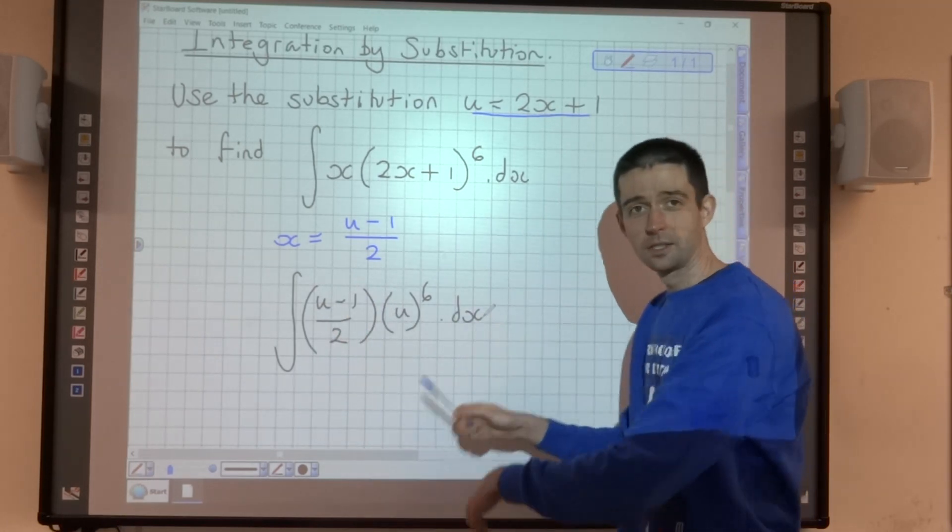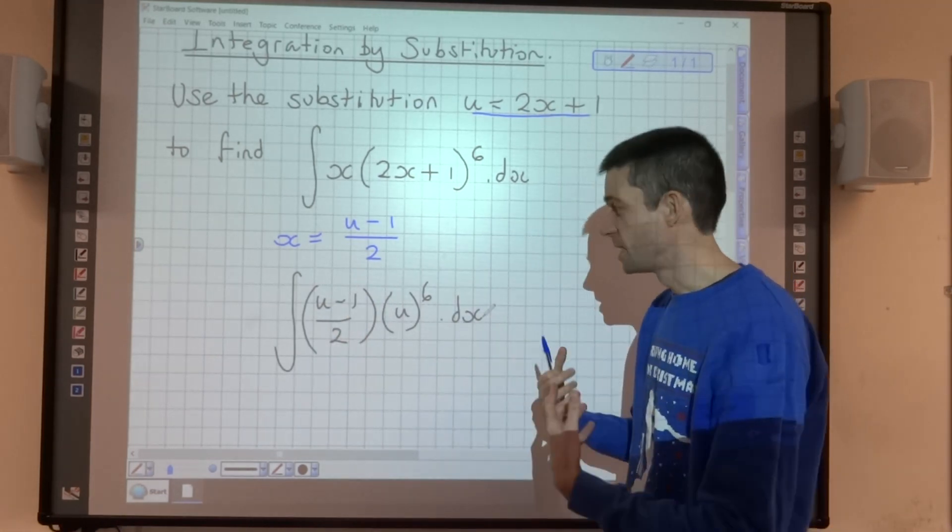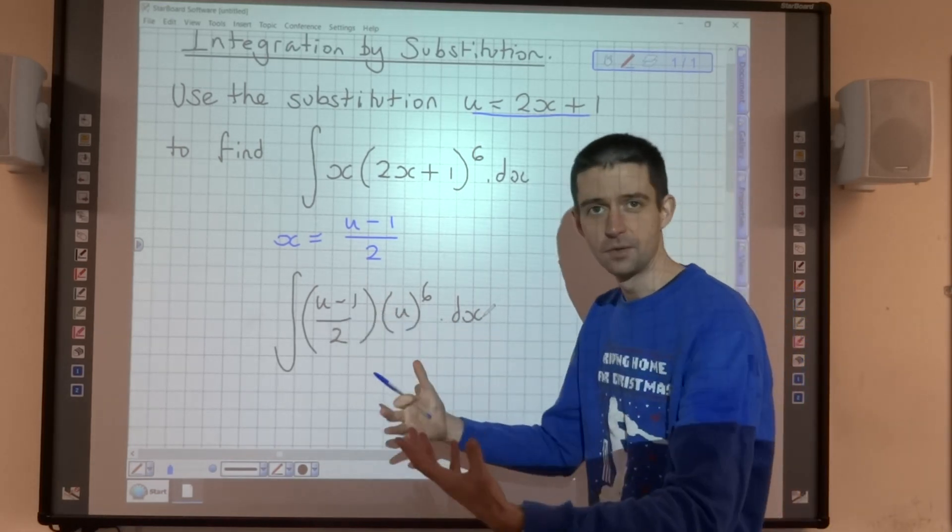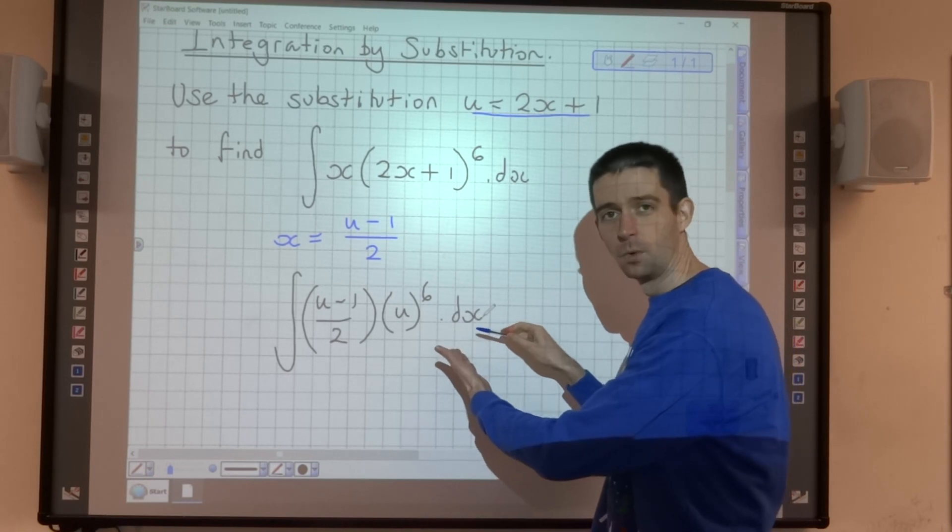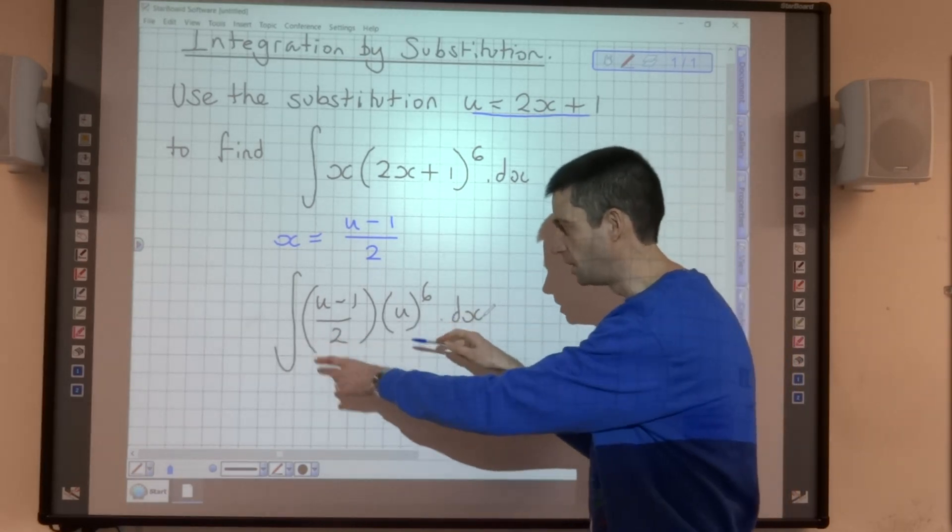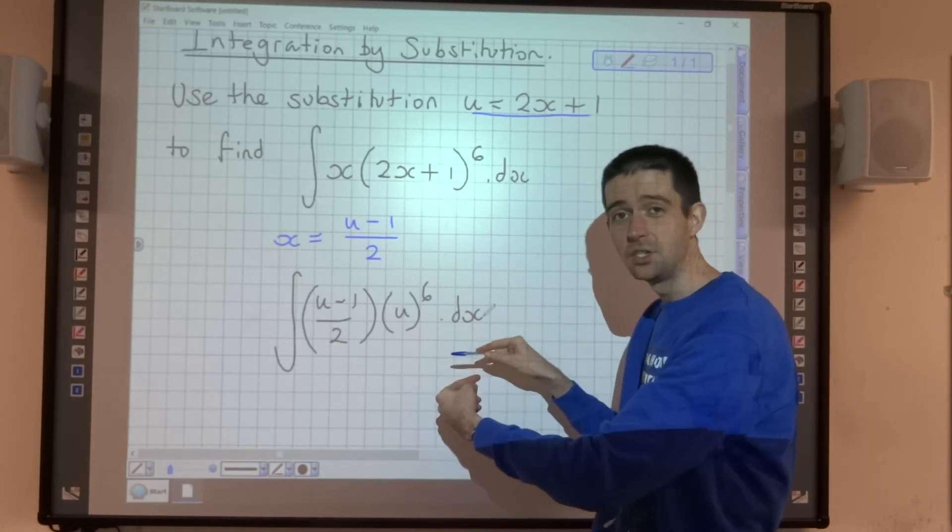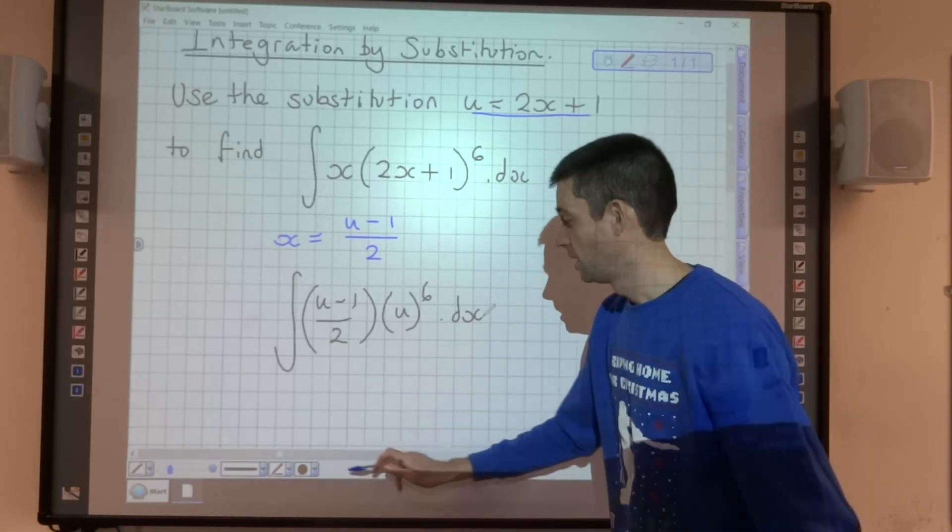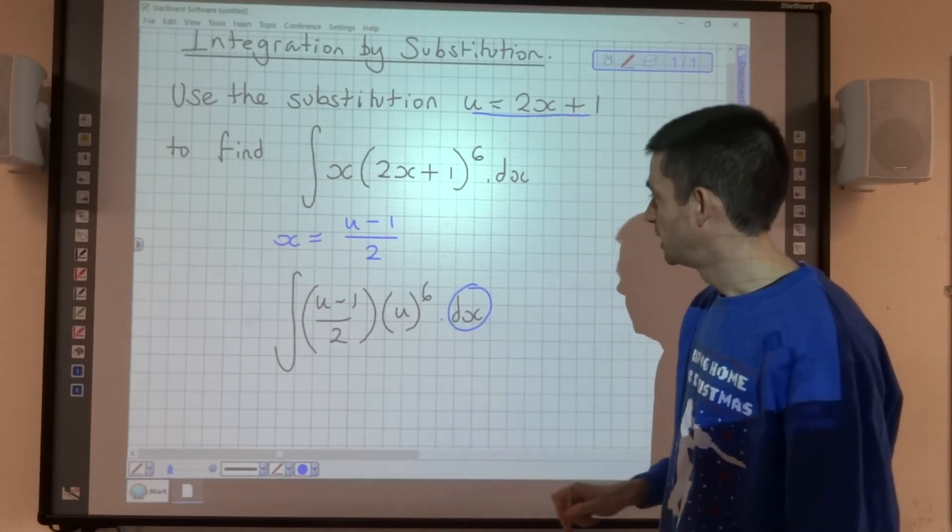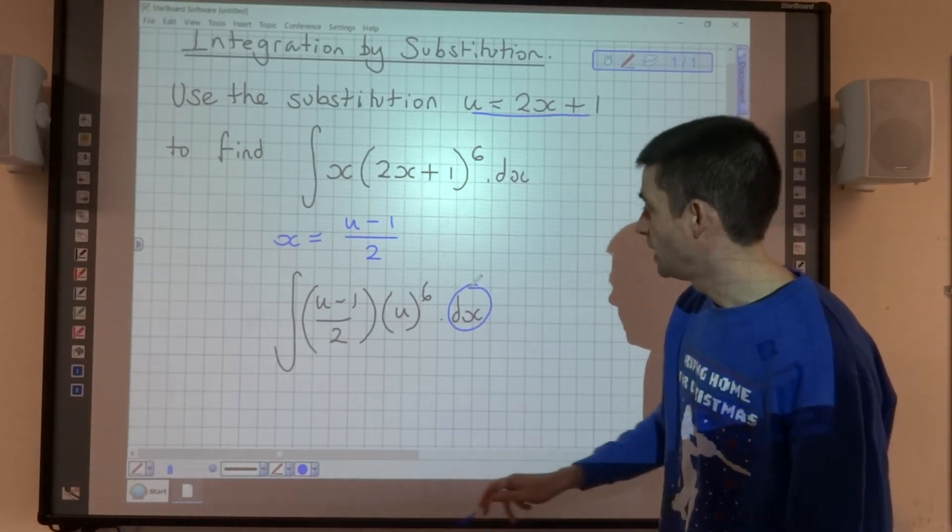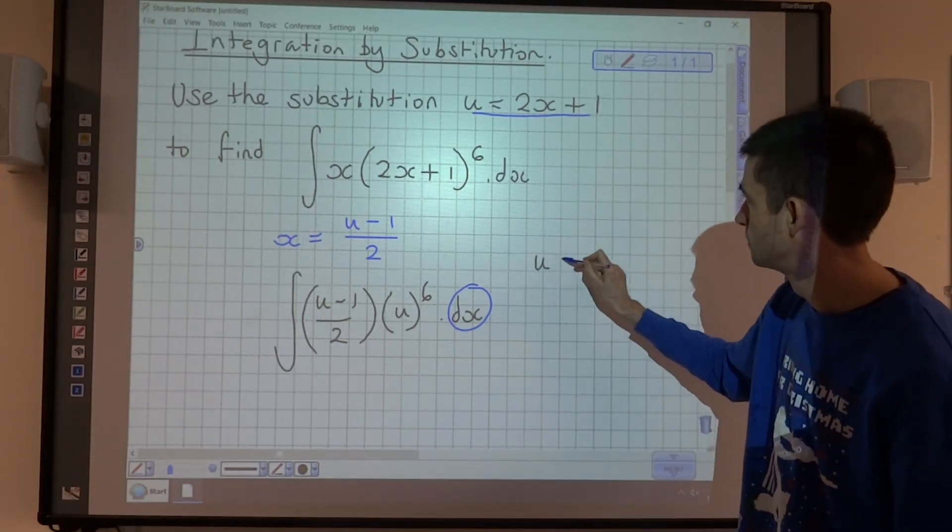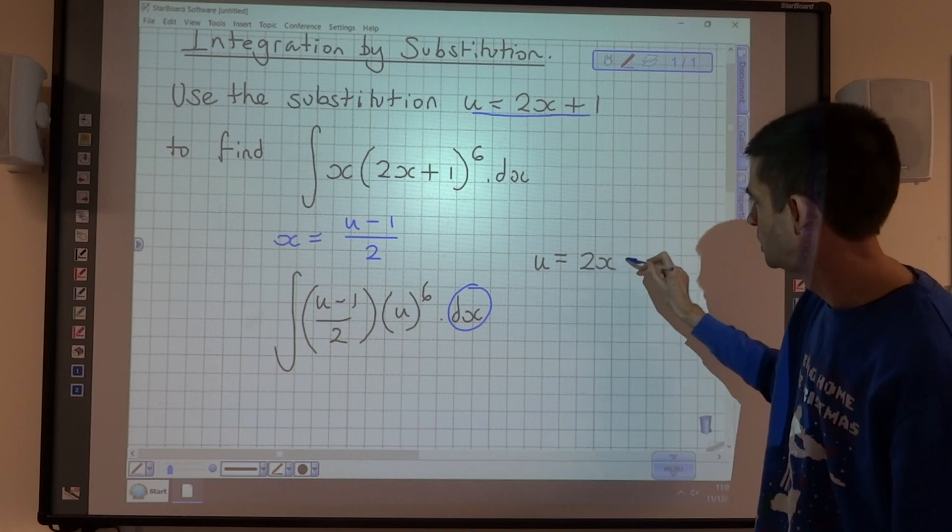Now, this little bit that comes on the end of an integral, often we ignore it because as long as it's the same as what we've got there, it's fine. But that is the key thing. This is telling us what we're integrating with respect to. So we cannot integrate in terms of u if this says dx. So we need to alter this so that we can integrate in terms of u.